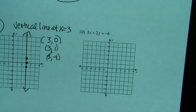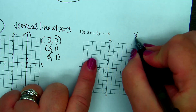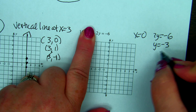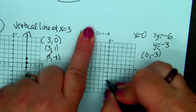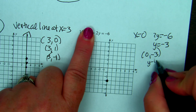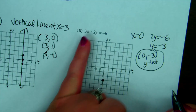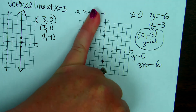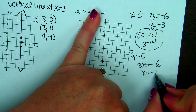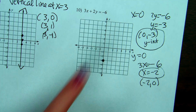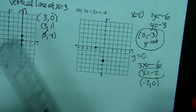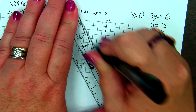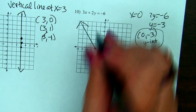When x is 0, cover up the x term: 2y equals negative 6, so y equals negative 3. The y-intercept is (0, negative 3), so you go down to negative 3. For the x-intercept, cover up the y — y is 0 — and you get 3x equals negative 6, so x equals negative 2. The x-intercept is (negative 2, 0). Connect those two points to make a line and you have it.